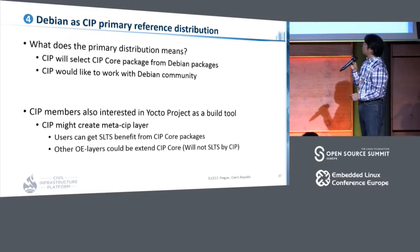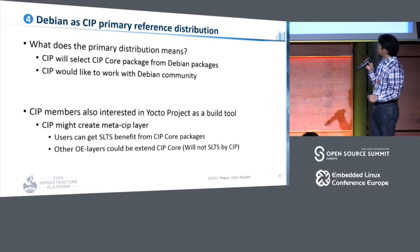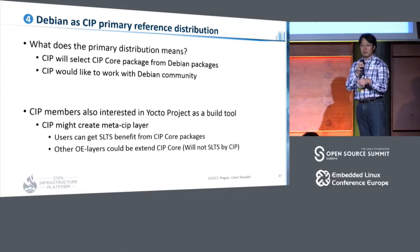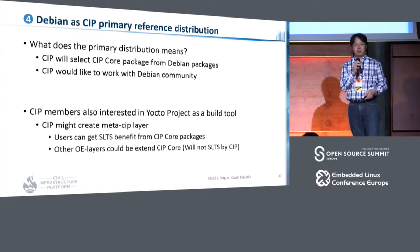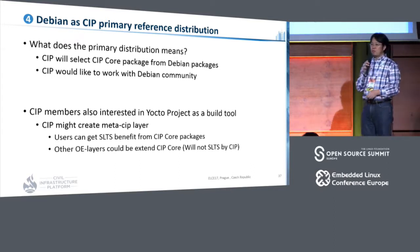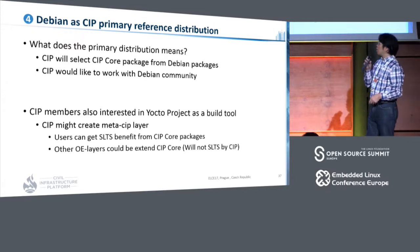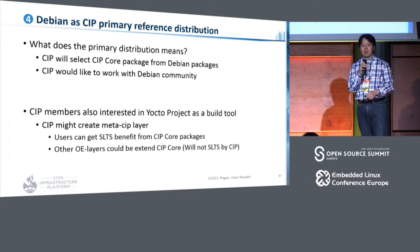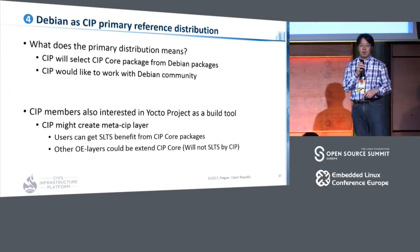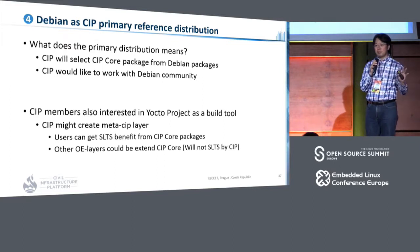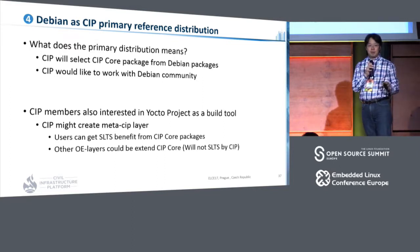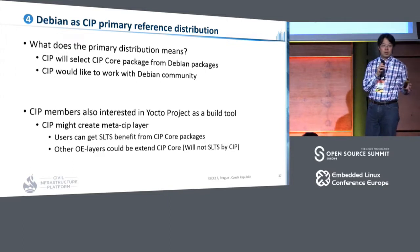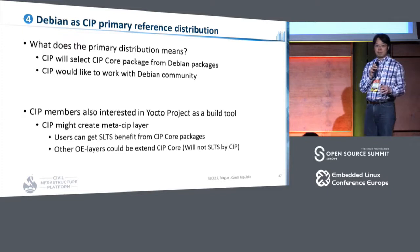CIP has decided to use Debian as the CIP primary reference distribution. The meaning of primary reference distribution is that CIP would like to work with Debian to have longer-term support, and CIP will select CIP Core packages from Debian packages. Currently, Debian has a long-term support project with a five-year support term, but CIP's requirement is 10 years or more. So we would like to fill this gap by collaborating with distributions.